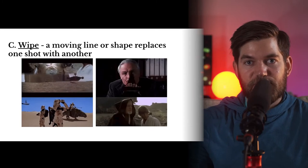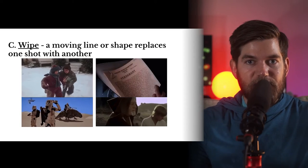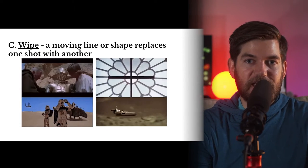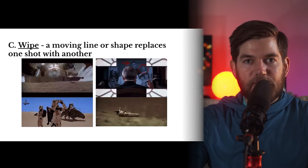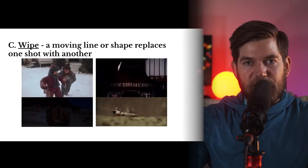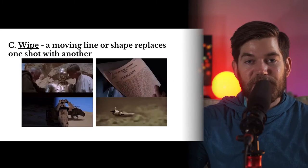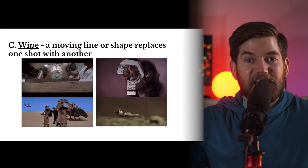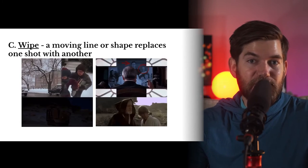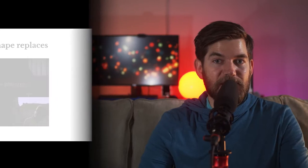The top right example uses shape wipes to go along with shapes within the image. The bottom left and bottom right examples show more wipe examples from Star Wars, because there aren't many modern examples using wipes. They're kind of considered tacky or cheesy, and along with all those other transition types in your editing software, you're not going to use them as often as fades or dissolves.